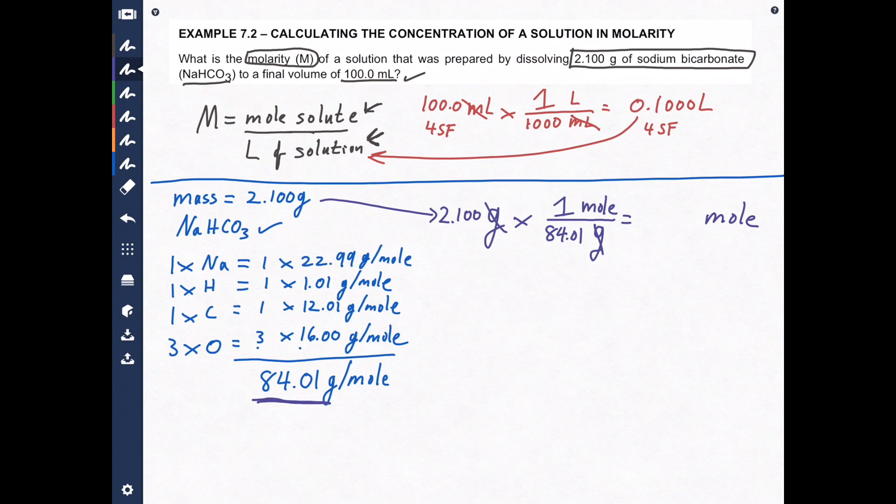2.100 divided by 84.01 equals. And the calculator, of course, gives me a string of numbers. 0.02499702. We have to round that. 4 sig figs. So we have to round this number to 4 sig figs. So here's my fourth significant figure. The next digit is 7. So that becomes a 10. That becomes a 10. So that becomes a 5. Equals 0.02500 mole. So that's how many moles of sodium carbonate we have.